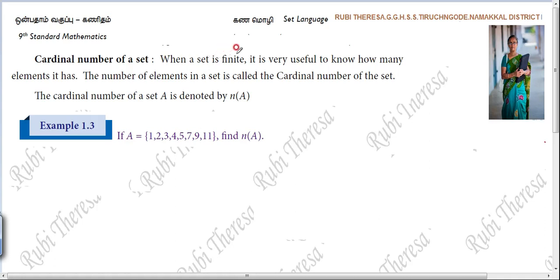When a set is finite, it is very useful to know how many elements it has. If it is finite, that means there are a countable number of elements in a set — then it is called a finite set. If there are countable number of elements in a set, then it is called a finite set. So you will be able to count it. This is the definition — if they are asking in the exam, it is enough to write this.